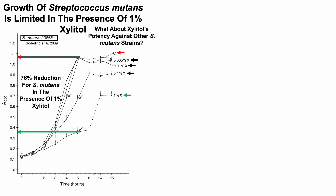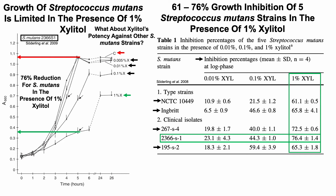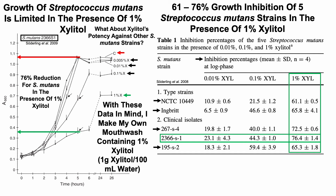What about xylitol's potency against other strains? There are five strains tested: 2366 S1 and four others, shown by the black arrows. In the presence of 1% xylitol, there is a 61–76% growth inhibition across all these Streptococcus mutans strains. With these data in mind, I make a homemade mouthwash containing 1% xylitol — that's 1 gram of xylitol per 100 milliliters of water.